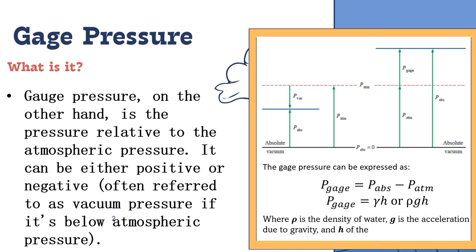Now we can look at the left side of the diagram. The gauge pressure is shown above the atmospheric pressure, and beside it is the absolute pressure. In order to get the gauge pressure, we subtract the atmospheric pressure from the absolute pressure, giving us the equation: gauge pressure equals absolute pressure minus atmospheric pressure.